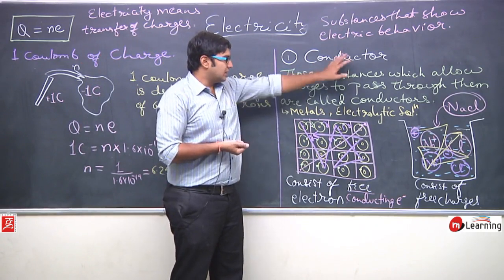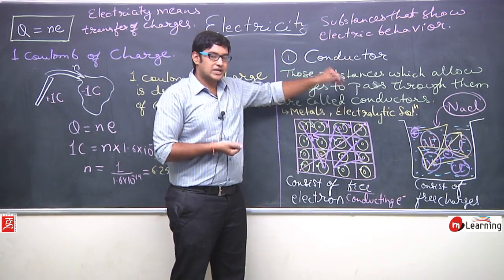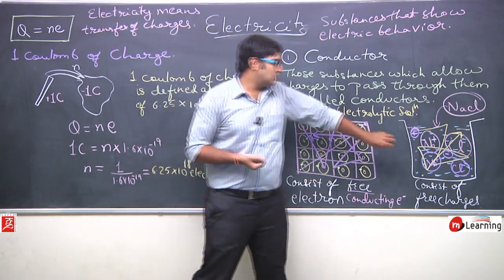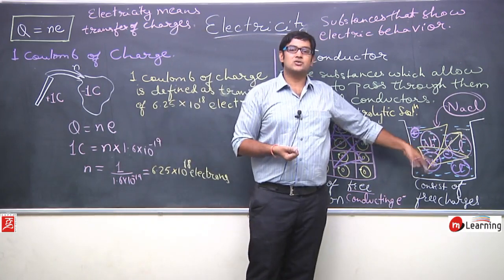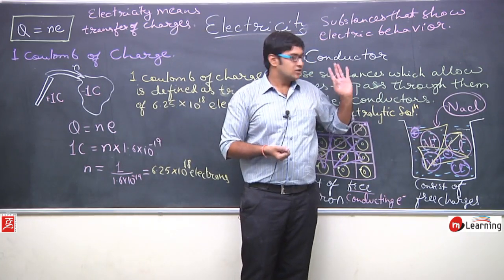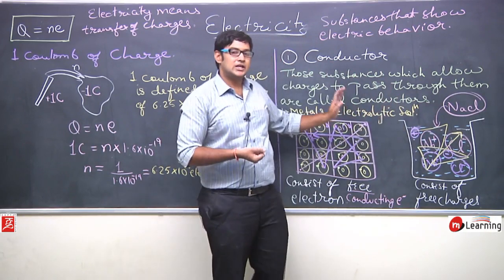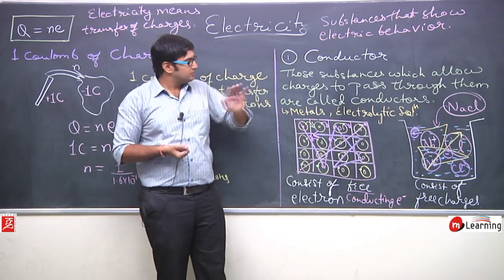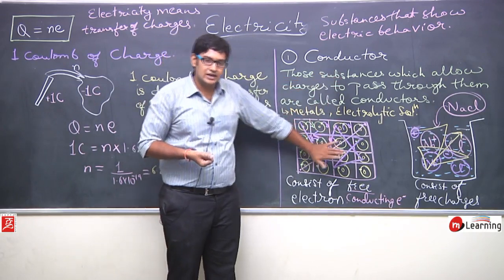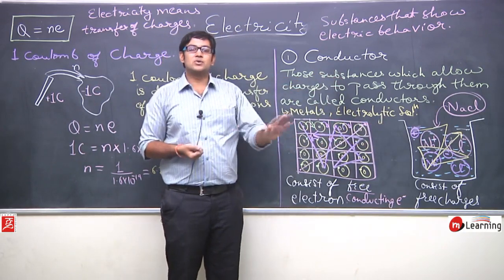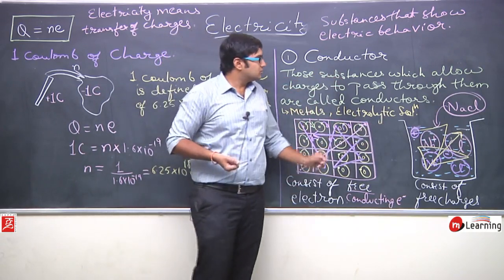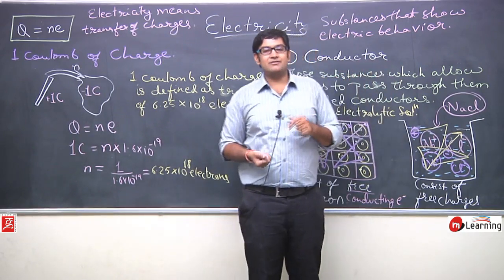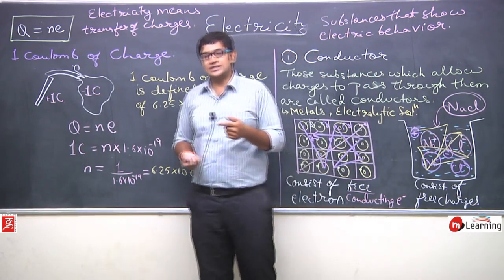So the examples of conductors are: metals, electrolytic solutions, and some non-metals like graphite. For a conductor, just remember this definition and these examples — it is more than enough for exams. A conductor is that which allows charges to pass through it: metals allow charges via free electrons, and electrolytic solutions allow charges via free ions.